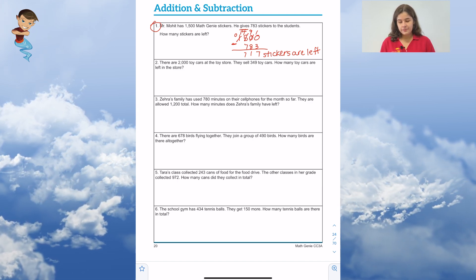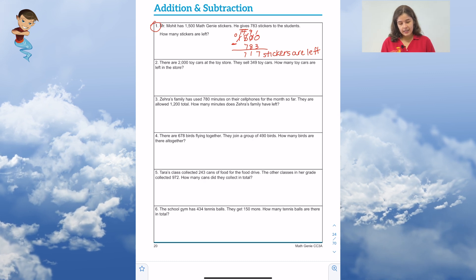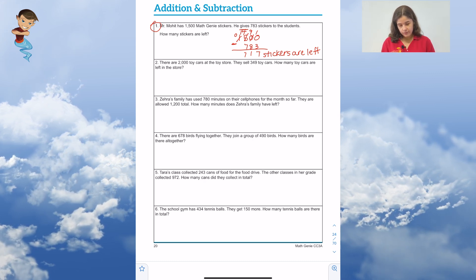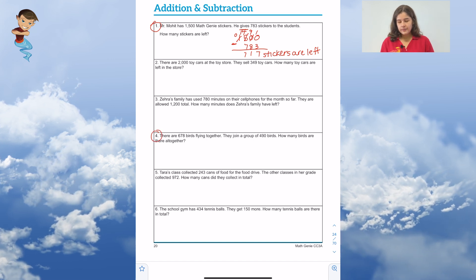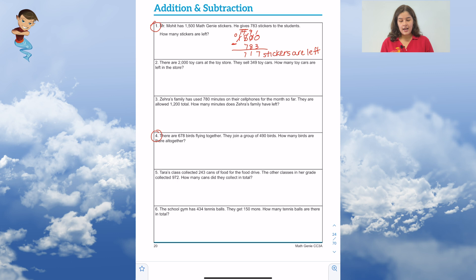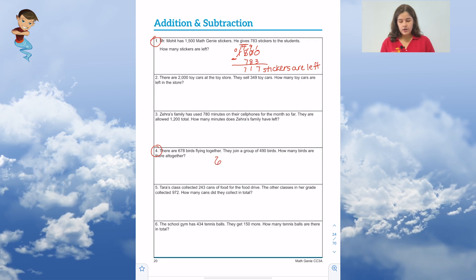Let's try another operation. Let's see if we can find one that's completing with addition. Let's take a look. Let's look at number 4. It says there are 678 birds flying together.